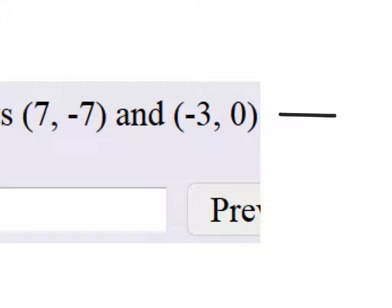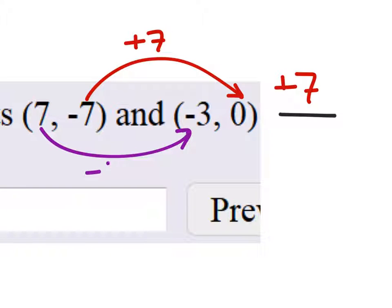Rainbow method seems to be the standard method of choice. From negative 7 to 0 you would add 7, that's our numerator. And from 7 to negative 3 you'd have to go down 10.